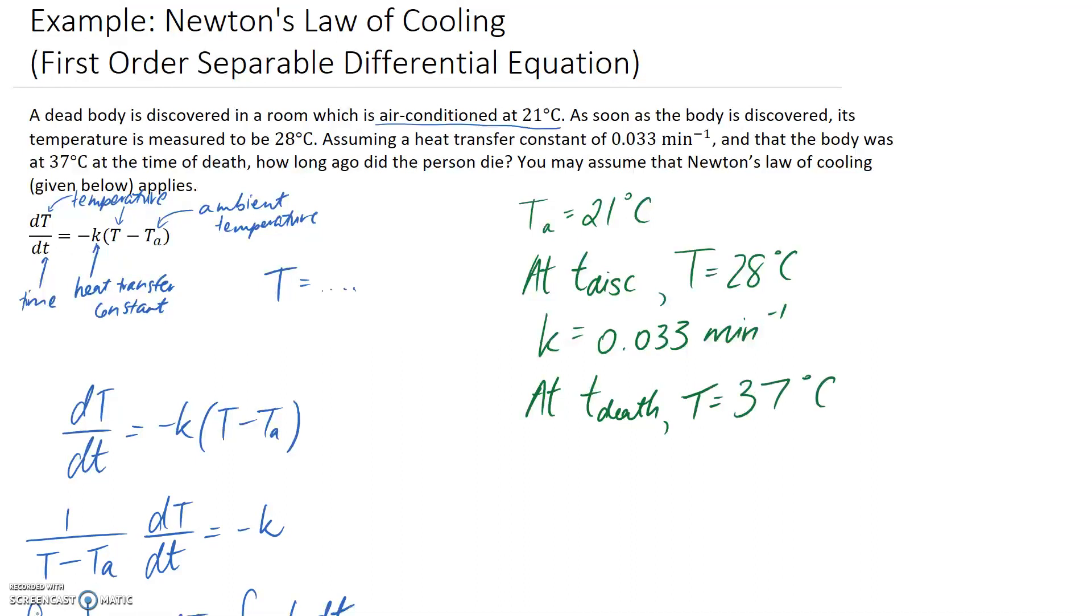A couple of these pieces of information are really easy. For example, TA is 21, and K is 0.033 can get directly sorted into our equation. These two here are a little bit more tricky. So what I'm going to do is I'm going to assume that the time that the person died is going to be my initial condition. So I'm going to set that to be equal to T at 0. And then in a moment, what we're going to do is try and figure out what time it was when the temperature hit 28.